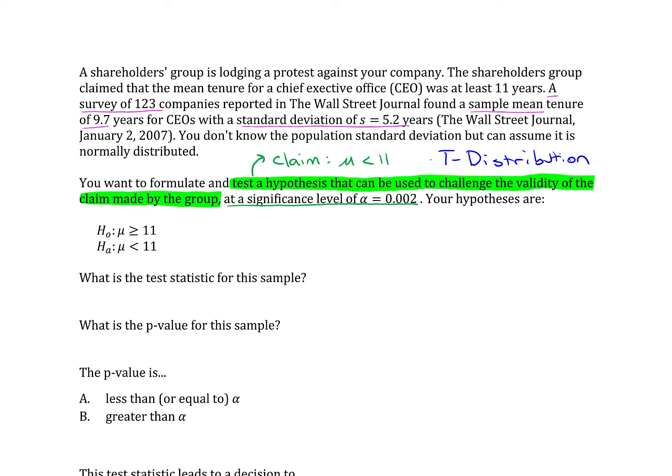But also we have a sample size of 123. And as long as our sample size is bigger than 30, then that counts for the central limit theorem. And we're guaranteed that the sampling distribution we're working with would be normally distributed.